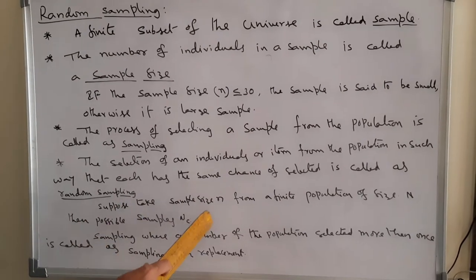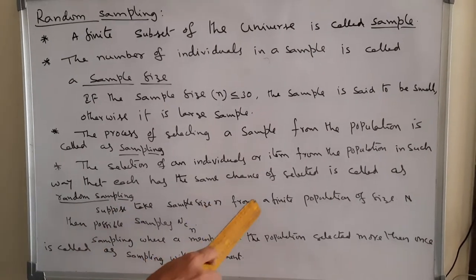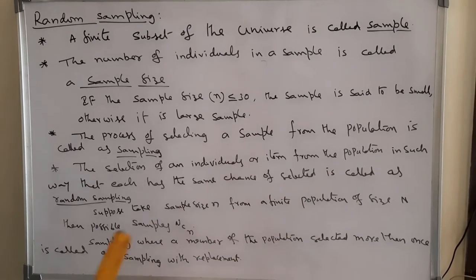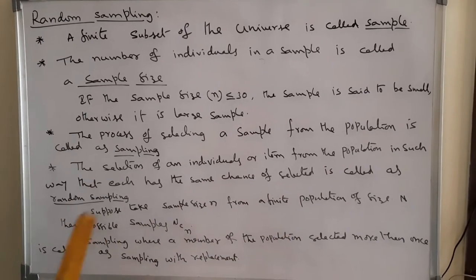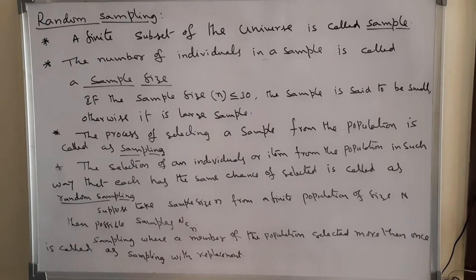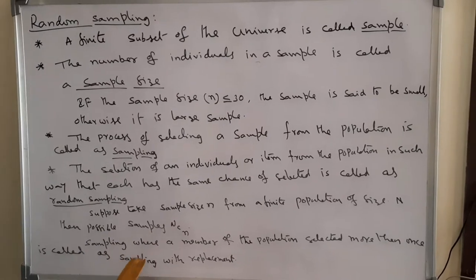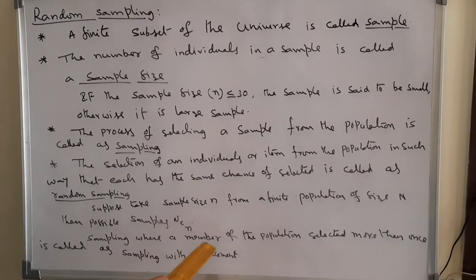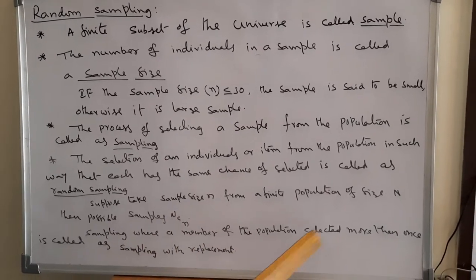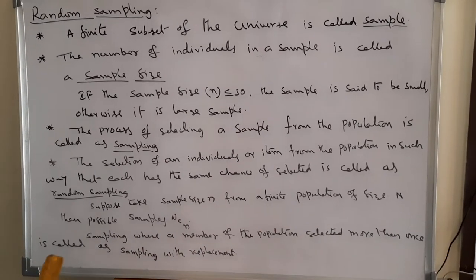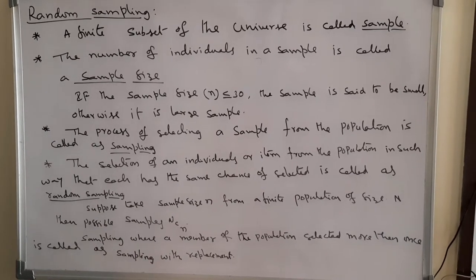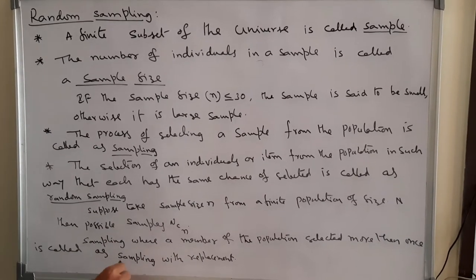Suppose sample size n is drawn from a finite population of size capital N, then the possible samples are N choose n. Sampling where a member of the population is selected more than once is called sampling with replacement.